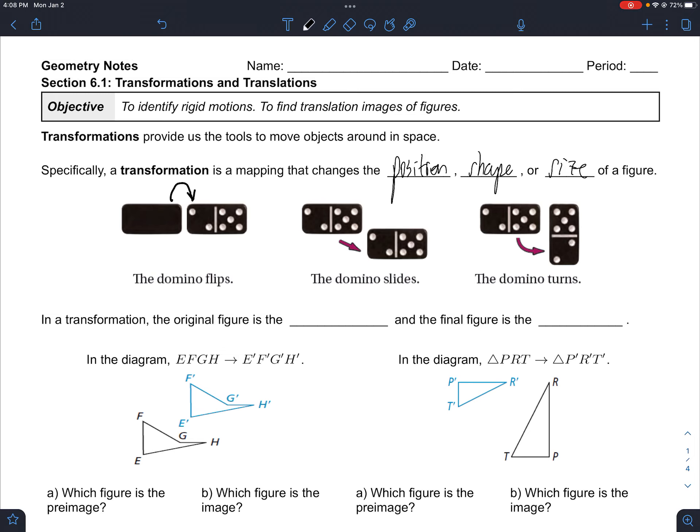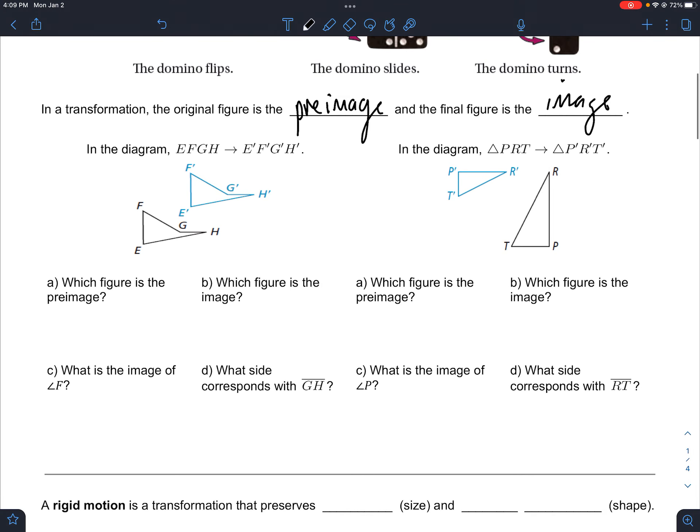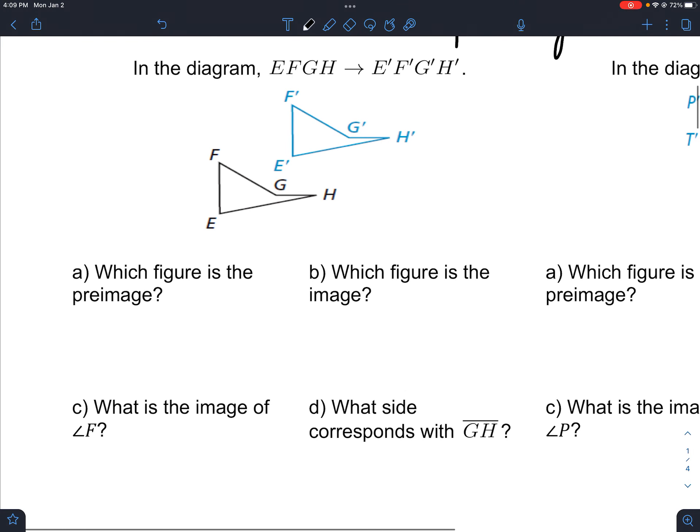We'll always call the original figure the pre-image, and the final figure is called the image. With this example here, we see that we've slid this figure this way. So its position has changed, but the size and shape seems to stay the same.